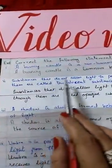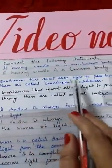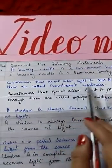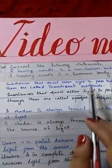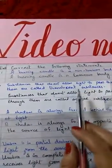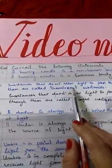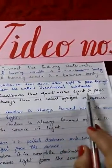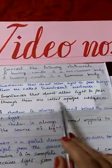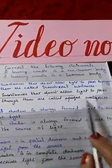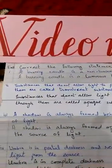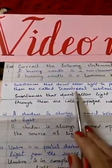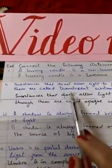Number 2 — substances that do not allow light to pass through them are called translucent substances. The correct answer is: substances that do not allow light to pass through them are called opaque substances.